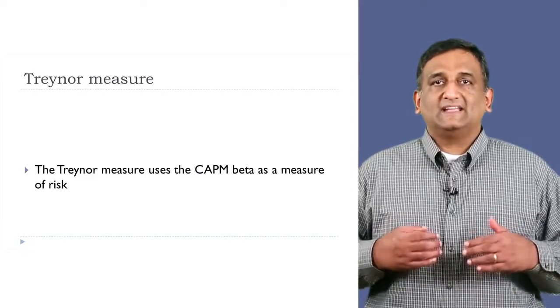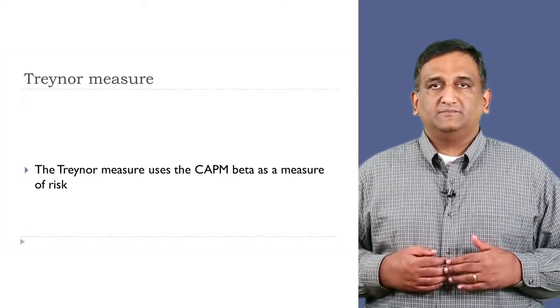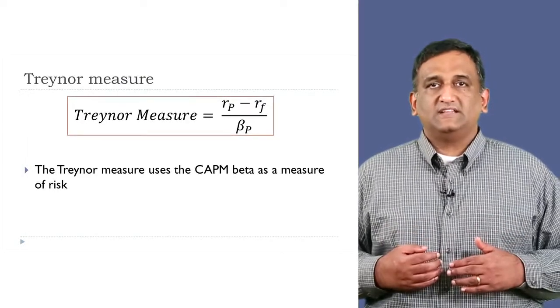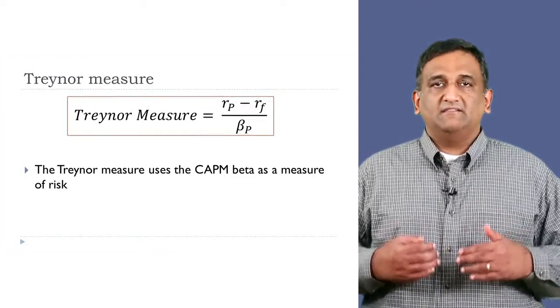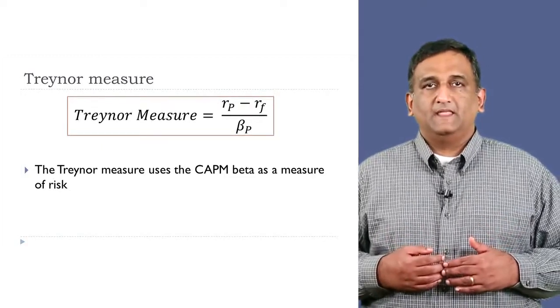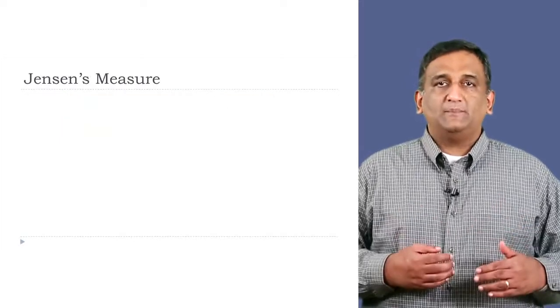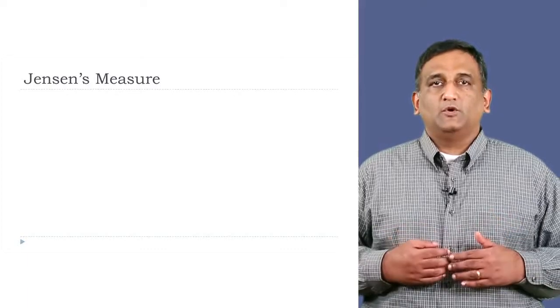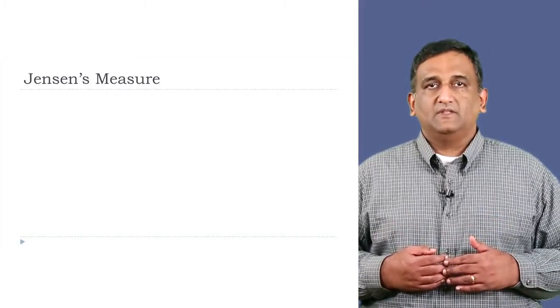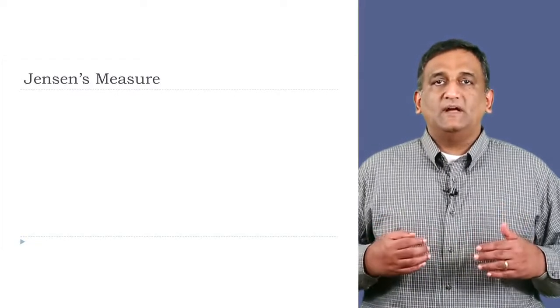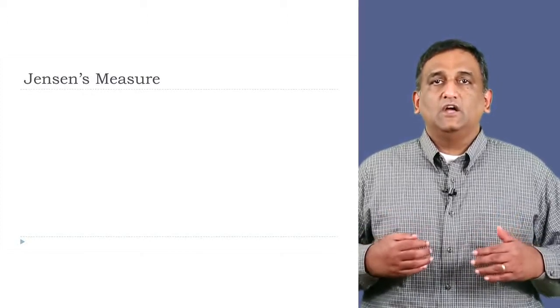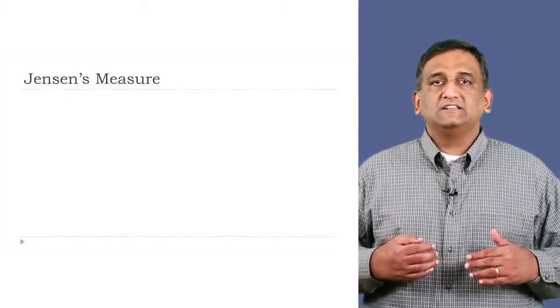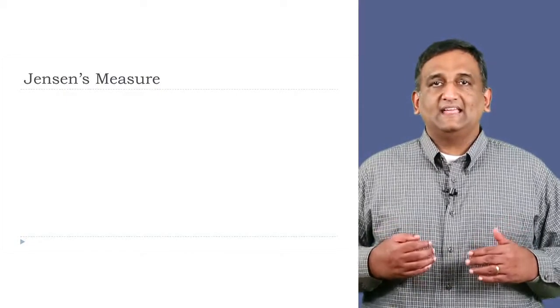The Treynor measure uses the CAPM beta as a measure of risk. It is the difference between the portfolio's average return over the sample period minus the risk-free rate, divided by its beta. A drawback of both Sharpe and Treynor measures is that they don't quantify how much additional value the portfolio manager is adding. All they say is how much excess returns the portfolio has earned for each unit of risk. Hence, they can largely be used as a ranking criterion only.